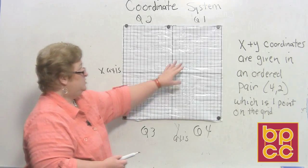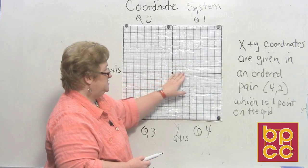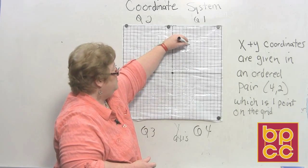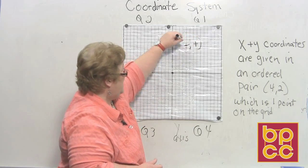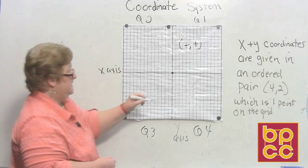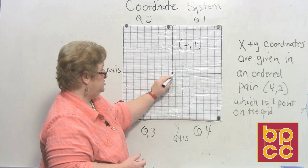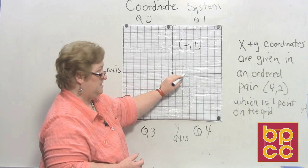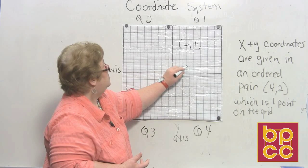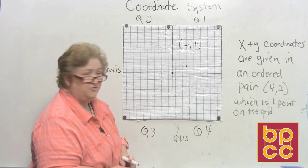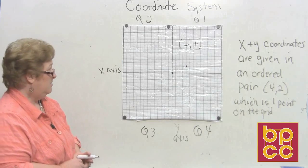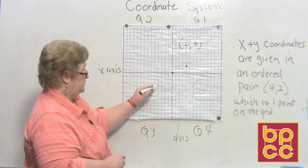In quadrant 1, the x's are positive and the y's are positive — both are positive. For example, the point (4, 2): from the origin, move over four in the positive direction, then go up two. That point represents (4, 2) and it's in quadrant 1.